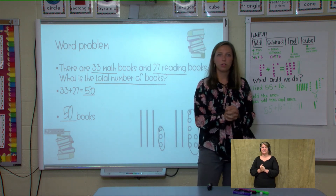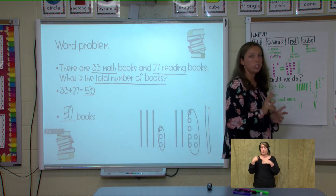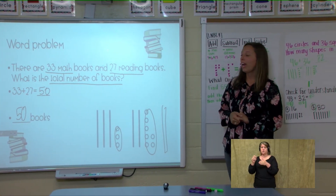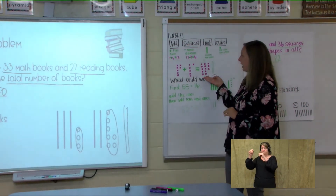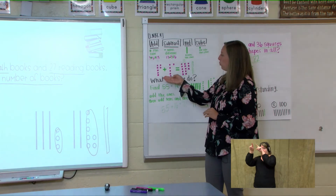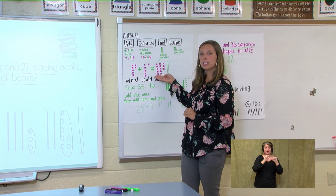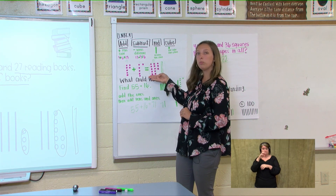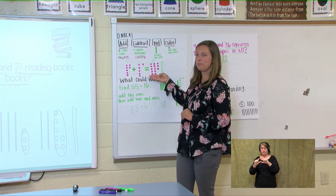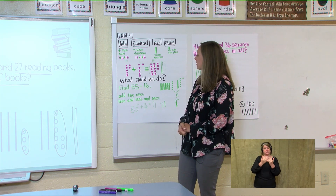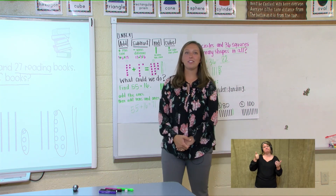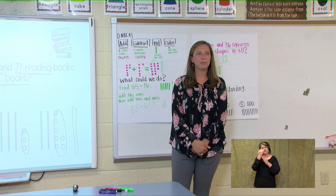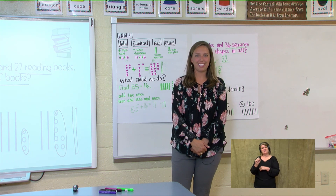Let's review what we did today. We used two strategies: the number bond and making a group of ten. When you count out your ones and you see that you can create a rod from the group of ones, that's your easiest bet. Thank you so much for joining us today in our lesson, and we'll be back with adding more on Monday.